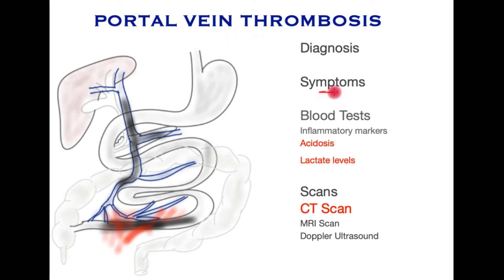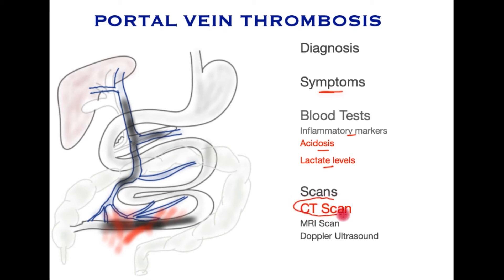So how do we diagnose this condition? The symptoms are usually non-specific and we may not fully appreciate how sick the patients are initially. Patients will require hospital admission and blood tests may show a rise in inflammatory markers. If the bowel is compromised, blood tests will show acidosis on blood gas analysis as well as a rise in lactate levels, indicating potential damage to the bowel. However, the most important diagnostic tool is a scan — commonly the CT scan. When deployed with contrast, it will indicate the extent of the clot in the portal venous system, its effects on the bowel, whether the bowel is compromised, and may also indicate the cause. An MRI scan may do the same but takes longer to perform. A Doppler ultrasound is more specific for picking out a clot in the vein but may not show other detail within the abdomen.